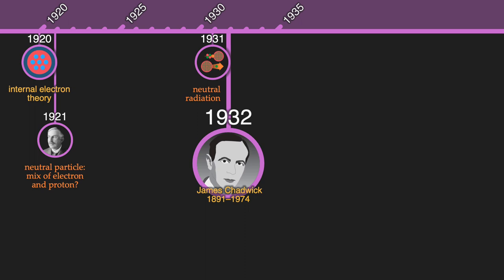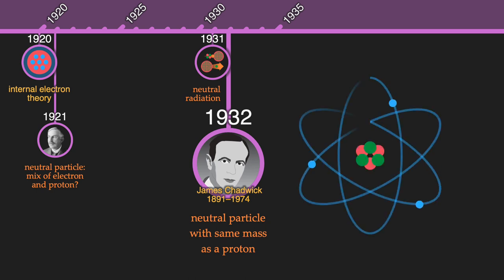In 1932, James Chadwick realized this neutral radiation wasn't gamma rays. It was a new particle with the same mass as the proton, the neutron, that Rutherford proposed over a decade earlier. With this discovery, scientists realized that there are three types of particles that make up the atom. Protons and neutrons that make up the nucleus, and electrons that surround the nucleus. But the story doesn't quite end there.